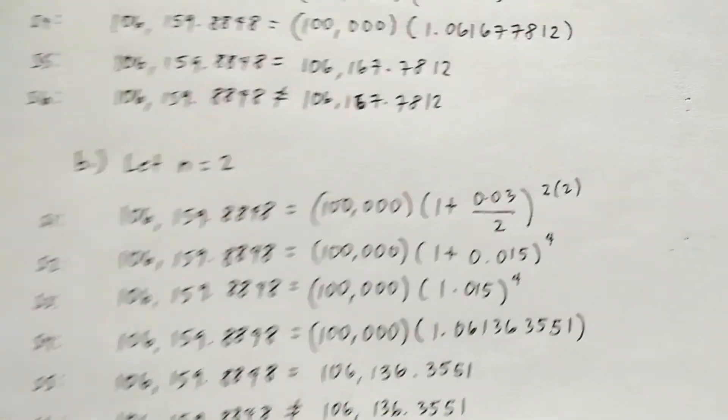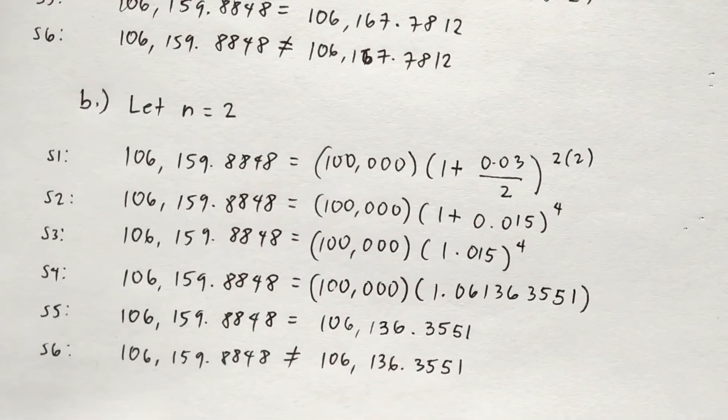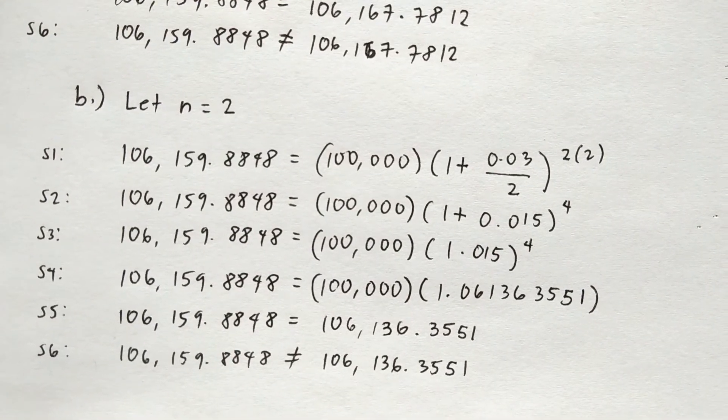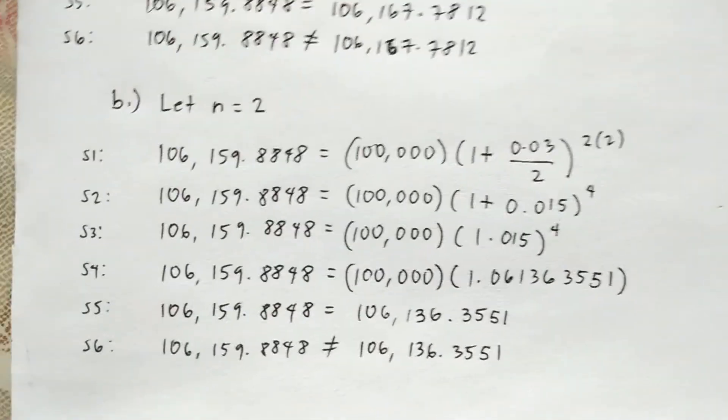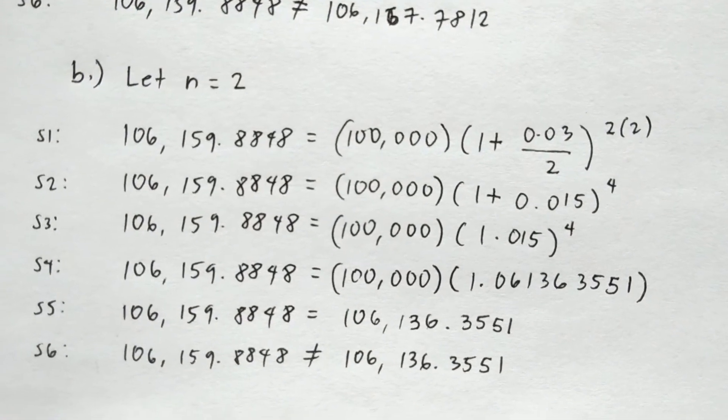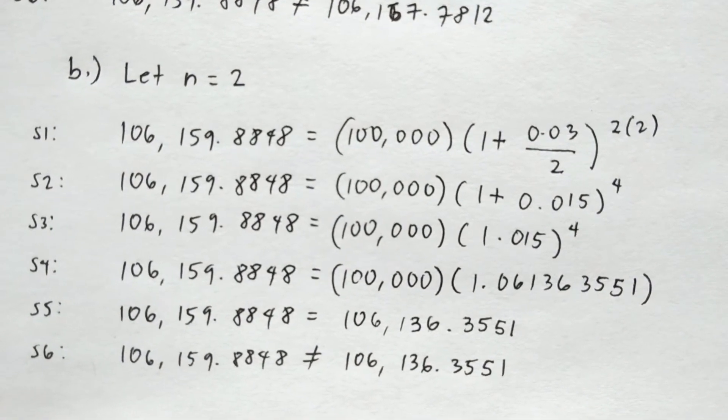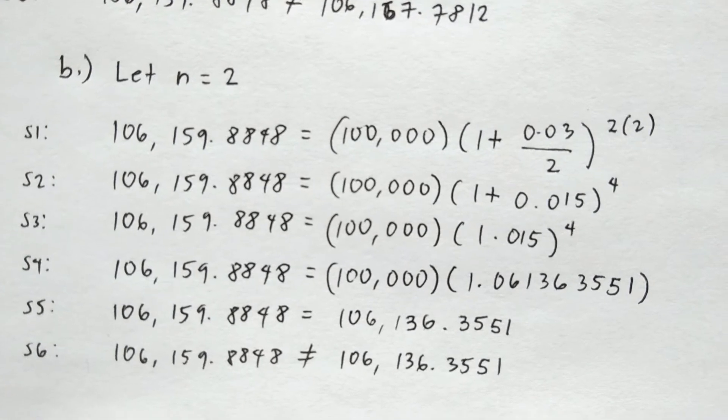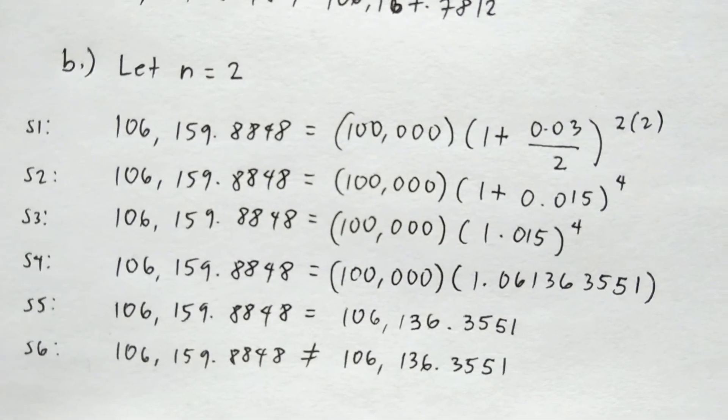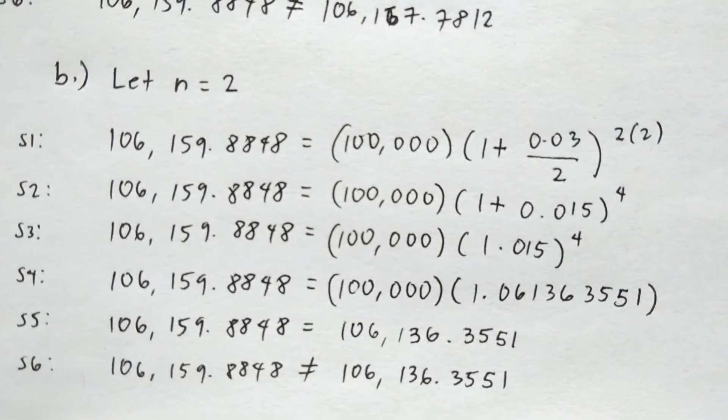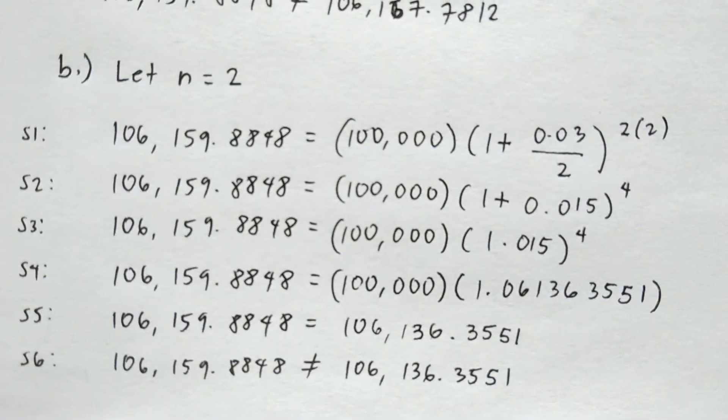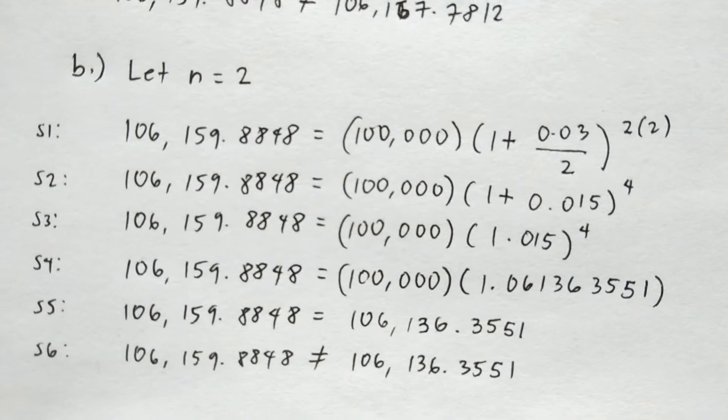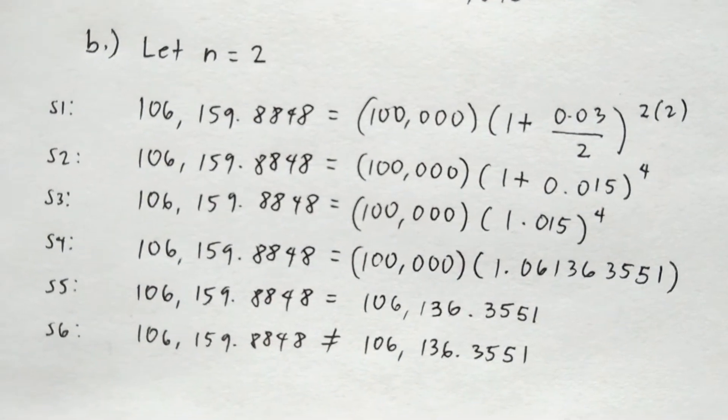Let's have letter b, n equals 2. The same as in a, we're not able to prove that both sides of the equation are equal, so we have this inequality sign. The steps I mentioned in letter a are the same in letter b.